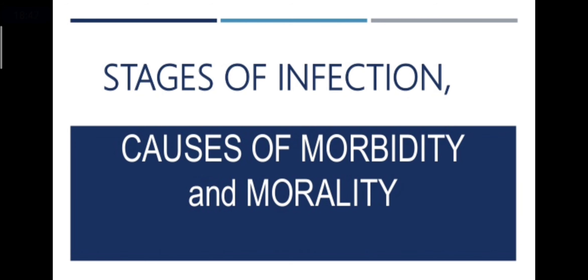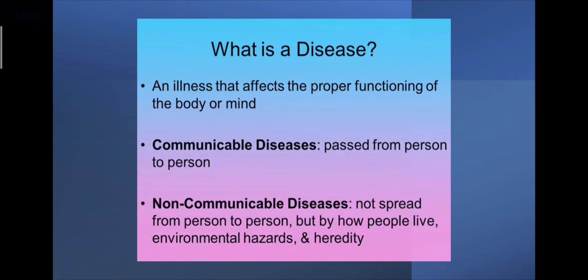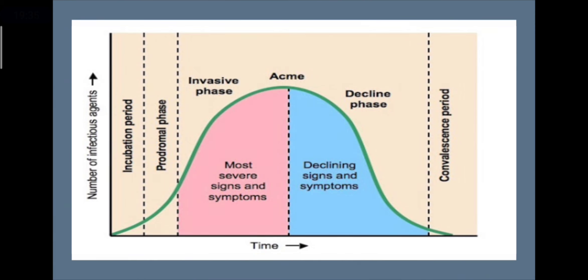Now let's talk about Health Education — the stages of infection, causes of morbidity and mortality. A disease is an illness that affects the proper functioning of the body or mind. There are two types: communicable diseases, which are passed from one person to another or by an agent — an example is the COVID-19 virus — and non-communicable diseases, which are not spread person to person but by how people live, environmental hazards, and heredity. The stages of disease go from incubation, to prodromal, to the invasive phase, to the acme or peak, then decline phase, and finally the convalescence period.